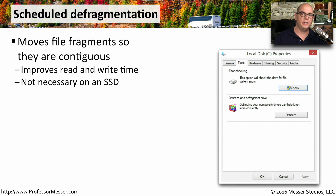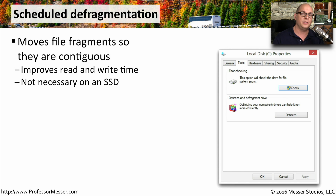If you're using a traditional hard drive with spinning platters, then you may want to take advantage of the built-in defragmentation function inside of Windows. Whenever we're storing files on our hard drive, parts of the file are stored in different places on the drive, so in order to read that file we have to revisit all of those different sections of the drive to put the file back together. If we're able to defragment that drive, we can take all of those different pieces and put them into one contiguous piece, so we only have to go to one place on the drive to read the file, which means it will have a much more efficient read and write performance.